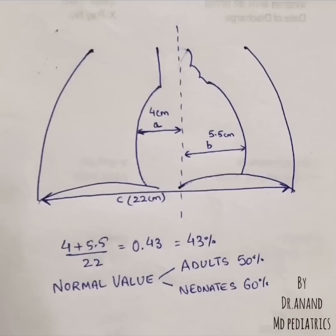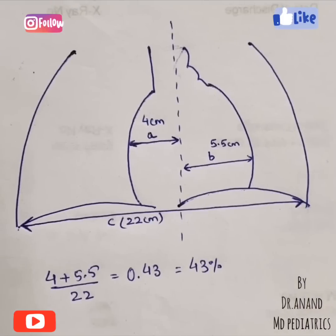That is the reason we always say cardiomegaly is diagnosed on a frontal chest PA radiograph. You should know various causes of cardiomegaly: valvular heart disease, mitral stenosis, mitral regurgitation, pericardial effusion, myocardial disease like ventricular aneurysms, ASD, VSD, and Ebstein's anomaly.